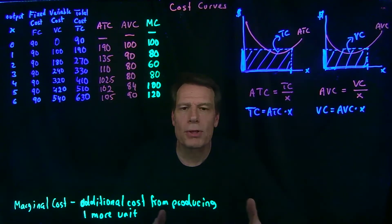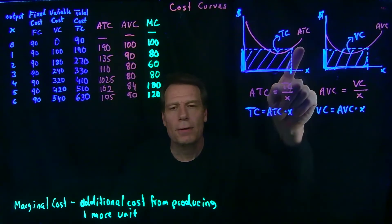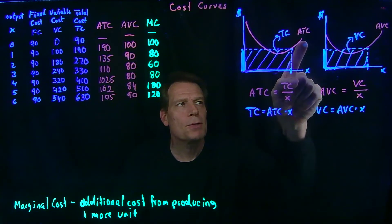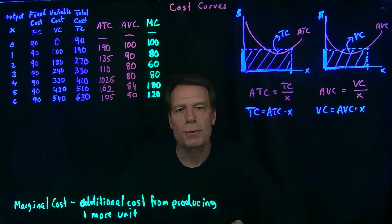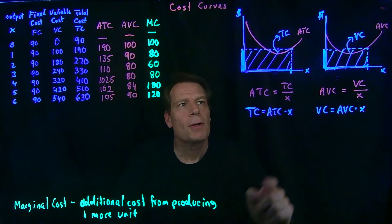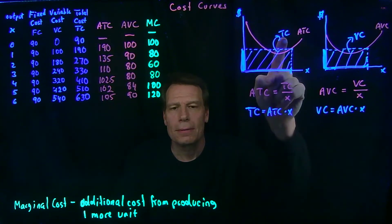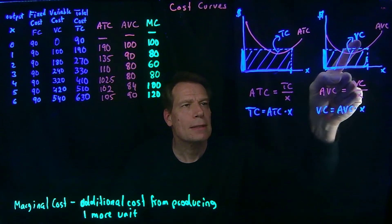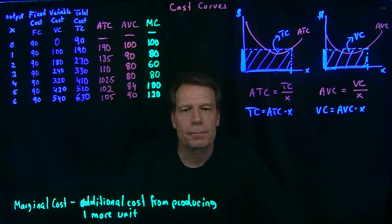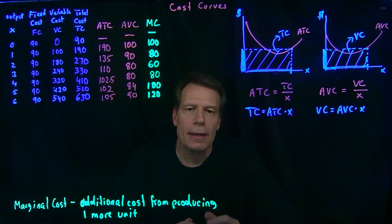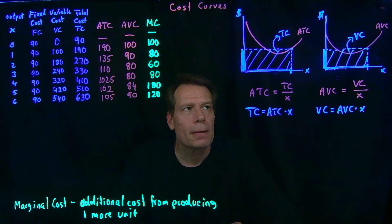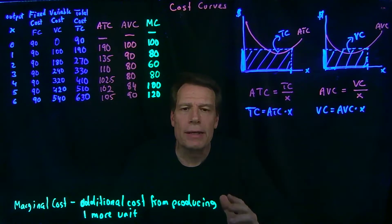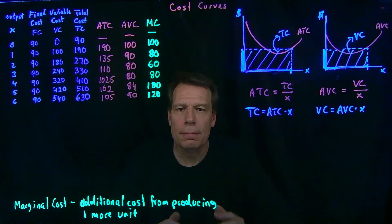The two pictures look almost identical, except they use a different cost curve — the average total cost versus the average variable cost. In the first case, the rectangle represents the total cost; in the second case, it becomes the variable cost. We can then ask: what's the relationship between those two curves if we put them on a single picture?